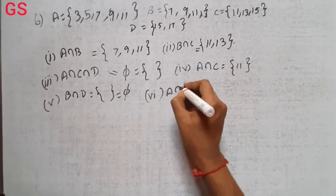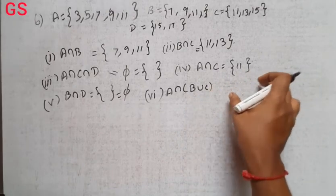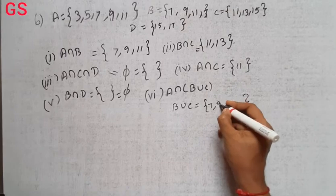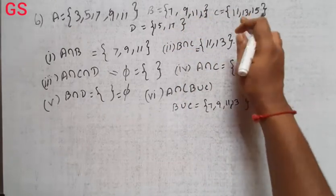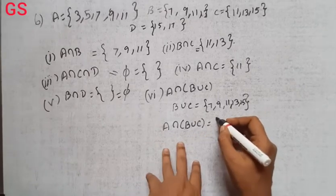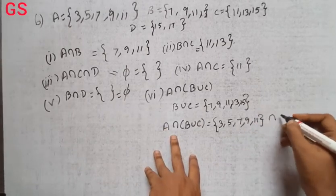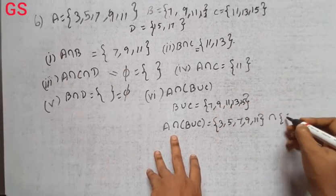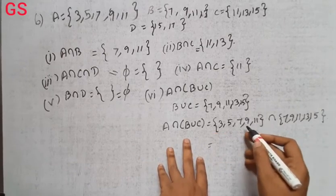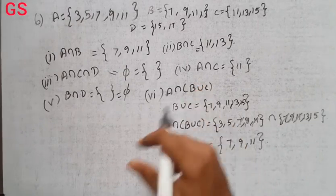Sixth subdivision: A intersection B union C. B union C is 7, 9, 11, 13, and 15. This is B union C. A intersection B union C: A is 3, 5, 7, 9, 11. Intersection with 7, 9, 11, 13, and 15. 7, 9, 11 is common. This is A intersection B union C, sixth subdivision.